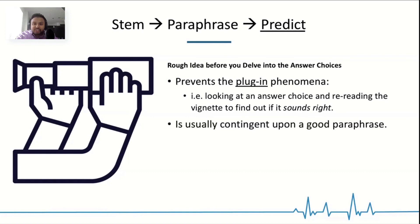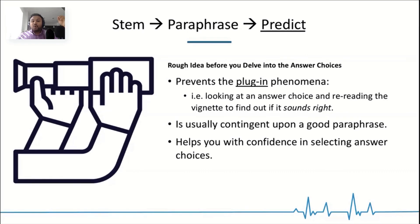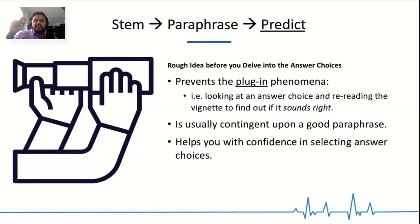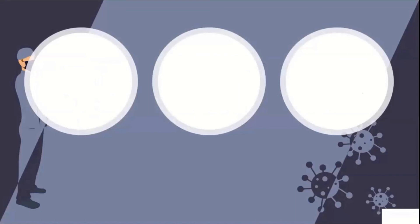And so, like I say, prediction is very contingent upon a good paraphrase. And it helps you with confidence in selecting an answer choice. Alright. I'm going into the answer choices now by saying, I'm looking for something related to lung that's chronic. And ooh, pulmonary fibrosis is going to be key.